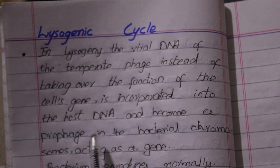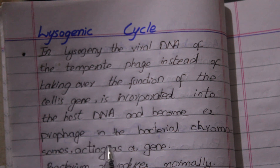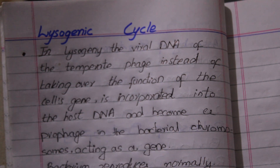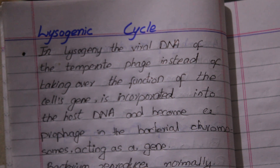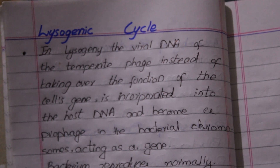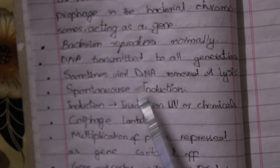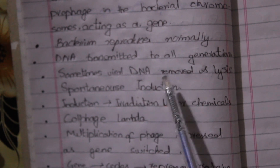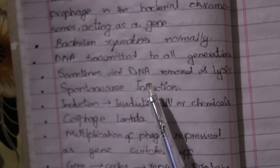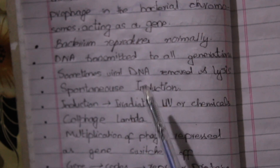This type of bacterial phage is known as a prophage — a phage in which the viral DNA is incorporated into the host DNA. It is inheritable. When the bacteria replicate, the viral DNA also reproduces with the bacterial DNA, and every new copy of the bacterial cell also carries the new copies of the viral DNA inside it.